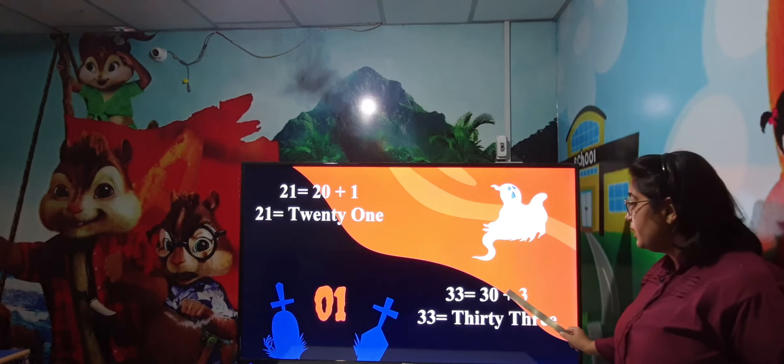Yahan par hi hamara last example hai. 99. 90 ki spelling pehle, aur phir 9. Isliye hamari spelling kya ho gayi? 99: N-I-N-E-T-Y (90) + N-I-N-E (9) = NINETY NINE.